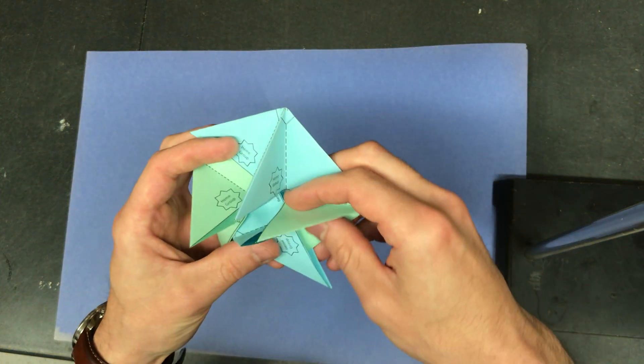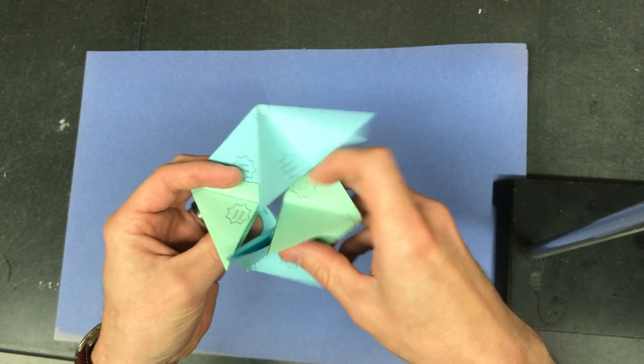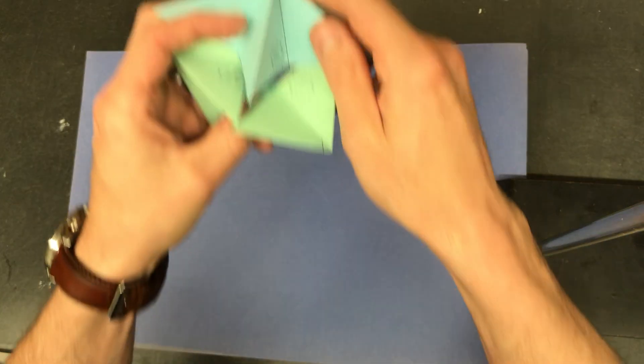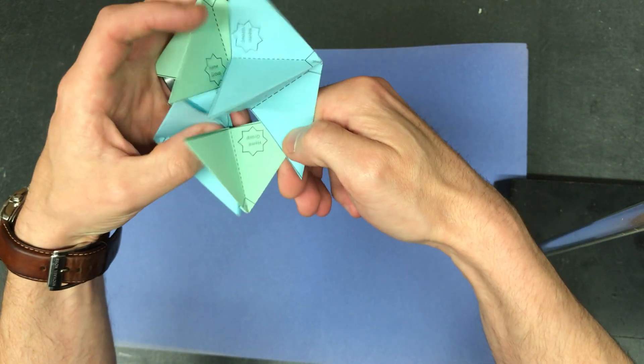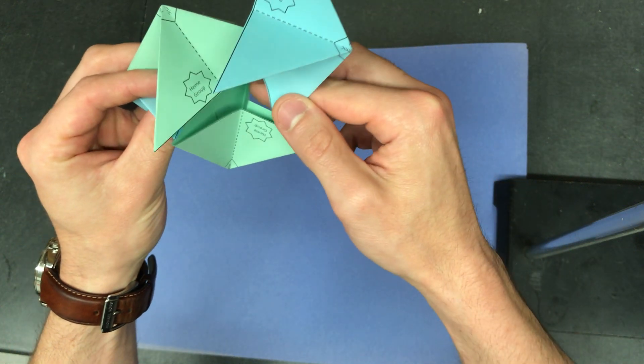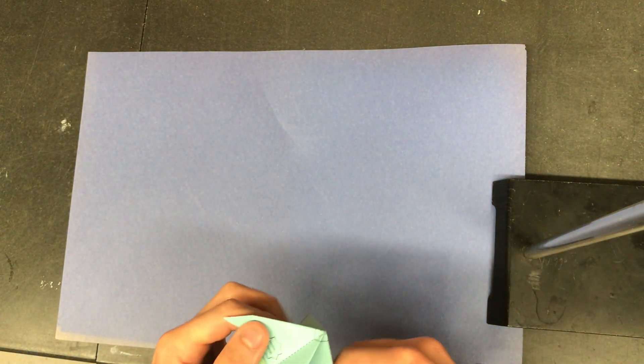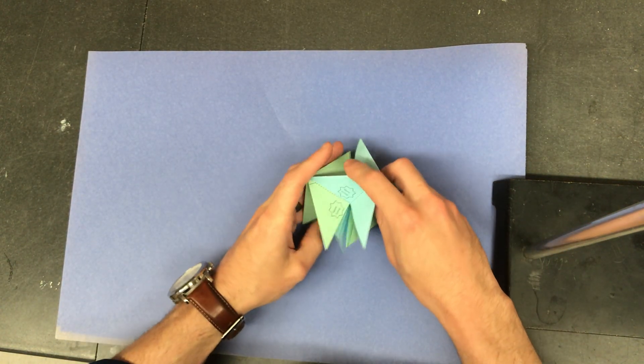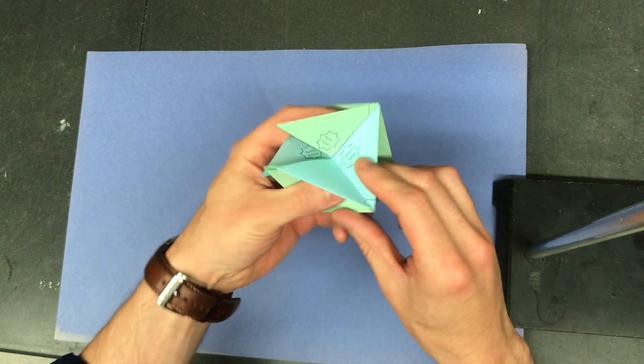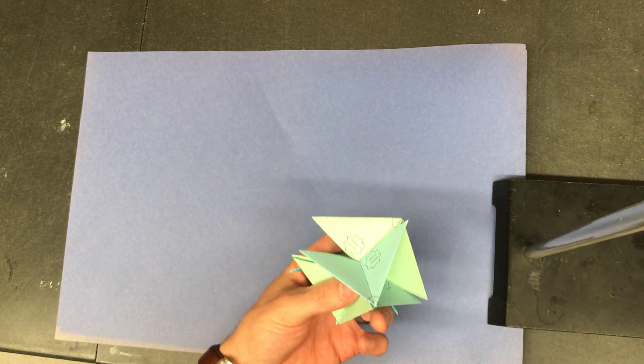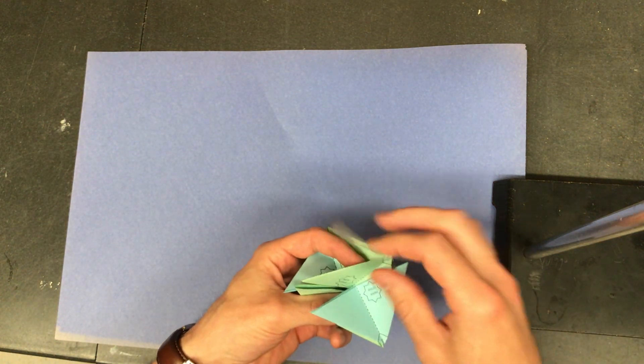Once you get these pieces together, you can put a little tape on them just to hold them together. Take a couple pieces of tape and put them in a couple spots that you think might help hold them together.